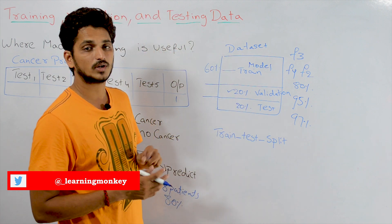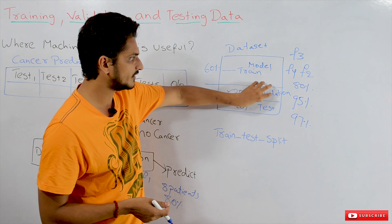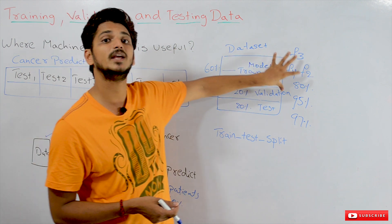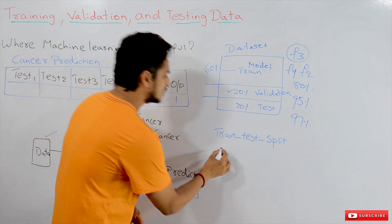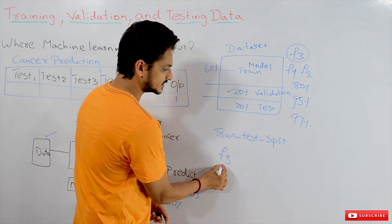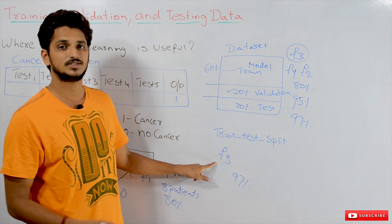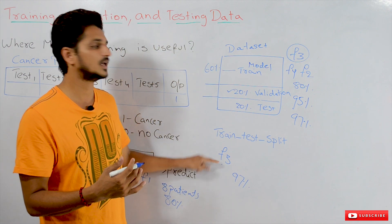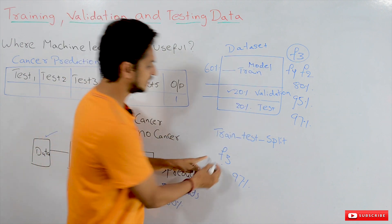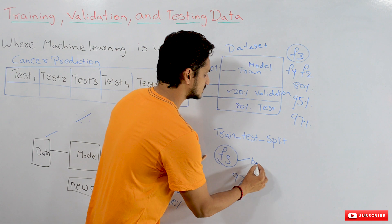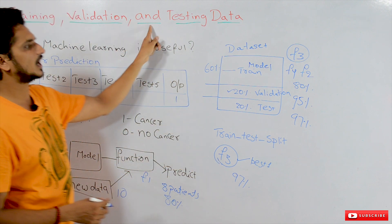Our model has to do well on test data — unseen data. The training data and validation data are seen by the model during the training phase. After finding the best function, apply your test data on this function. If this function gives the same 97 percent accuracy on the test data — unseen data, meaning data not seen during the training phase — then you accept this function as the best function, the best model. This is what training data, validation data, and testing data means.